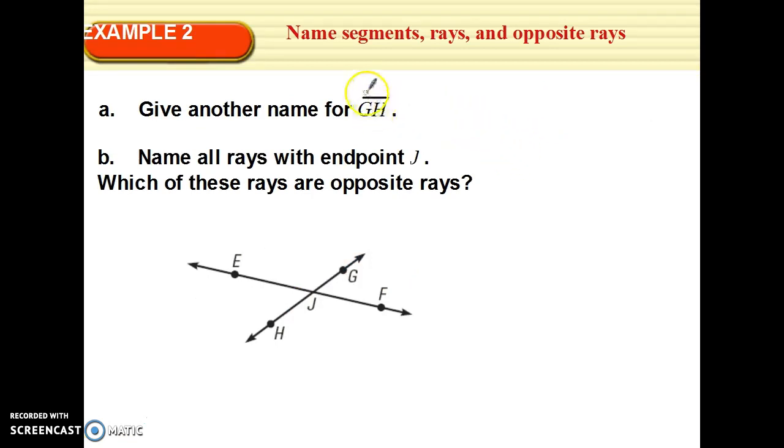Give another name for segment. This one's a segment. It doesn't have the arrows. That means that it has an end point at the G and an end point at the H. Another name for segment GH. It goes from this point to this point. How else can I name segment GH? Segment HG. And that's the only other name for it because we're talking about this specific portion of a line. It's that exact distance of that segment. A line goes on forever, but a segment is a portion of that line.